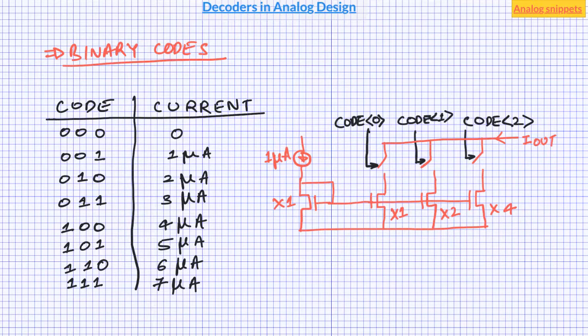For PMOS current pair we just need to invert the codes and then apply it to the switches. As for the incremental value of current sources, if we are starting from some initial current value I0 which is 0 ampere here, and some incremental value of delta I which is 1 microampere here, then incremental value is doubling in each successive steps.